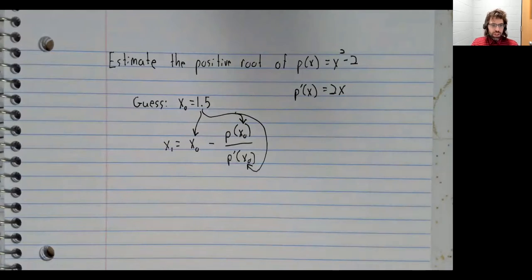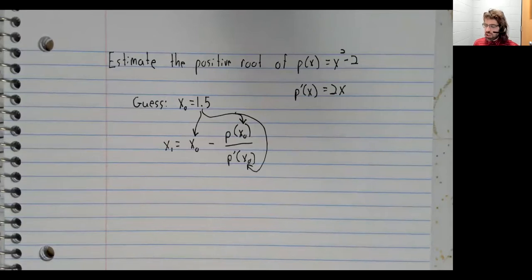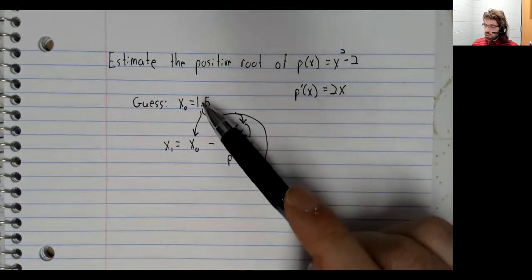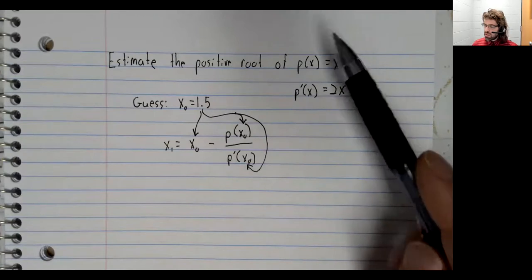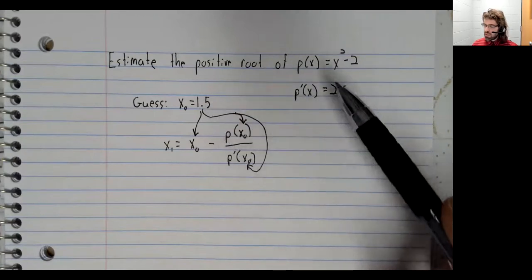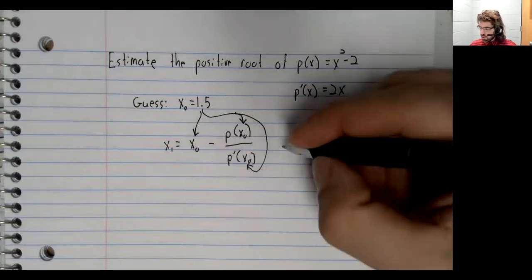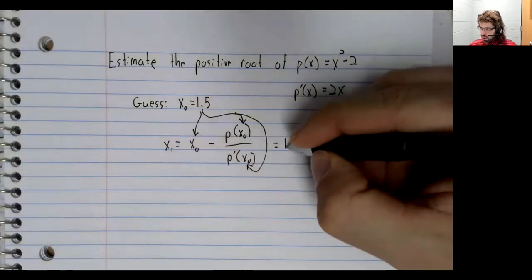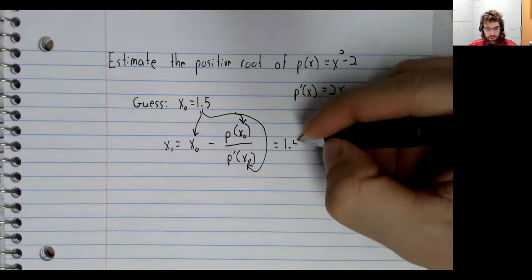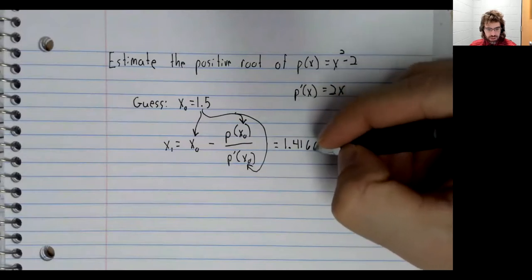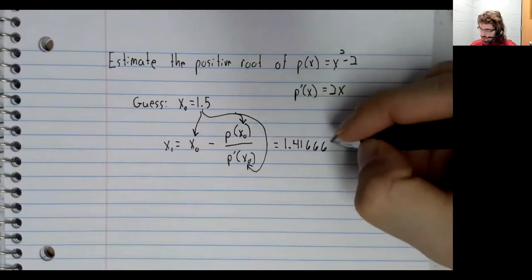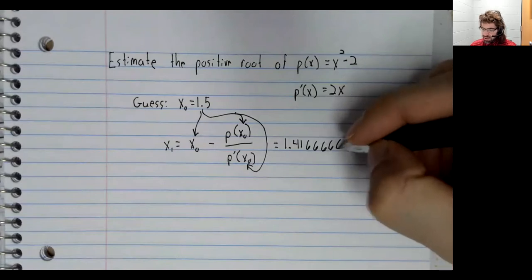So this is very plug and play. I'm not going to do this on screen—I'm not going to bring up a calculator. But we plug 1.5 into this and into this, do the division, do the subtraction: 1.41666666.